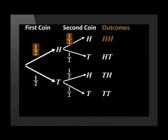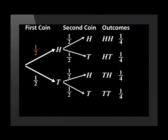We can now write all four outcomes from tossing two coins. The first outcome is heads on the first coin and heads on the second. The second outcome is heads on the first coin and tails on the second. Outcome three is tails on the first coin and heads on the second. The fourth outcome is tails on the first coin and tails on the second. We can also write out the probabilities of each outcome since they are independent by multiplying along the branches. So the probability of getting two heads is one-half times one-half, which is one-quarter.